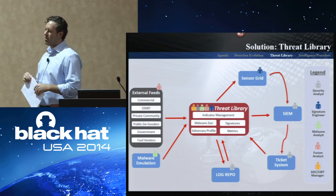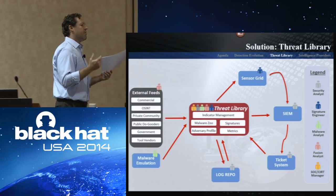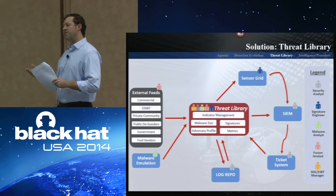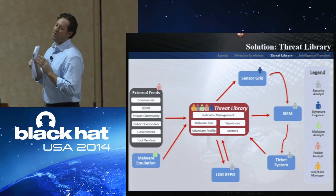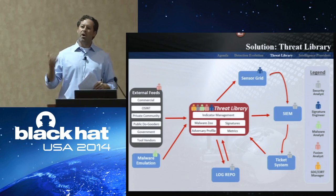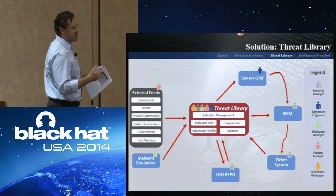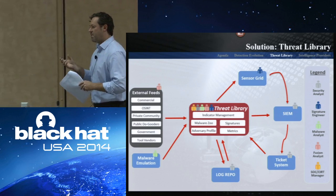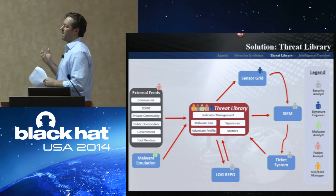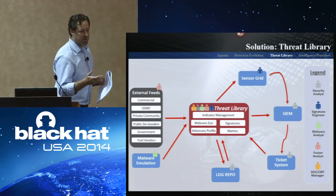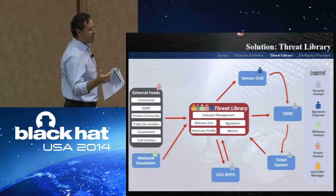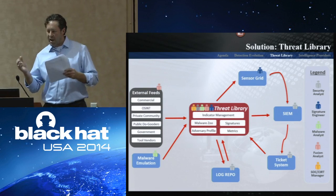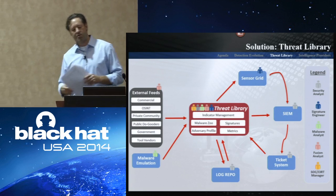The other important thing is metrics. Living in a SOC most of my life, executives always want you to build metrics. Historically it's been: how many tickets did you do this month? The absolute worst quantitative metric is ticket count. Better metrics are the quality of tickets and the dwell time of the adversary. From a threat library standpoint, if you can ingest from a ticketing system or a SIEM, you can start to build: what are my best sources of intelligence — open source, a paid commercial feed, the government, a private community? Who's giving me the best pool of intelligence?